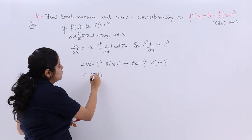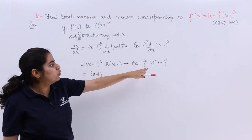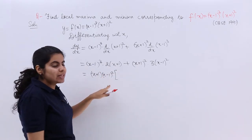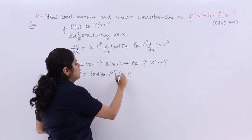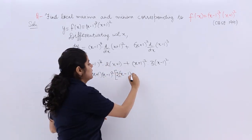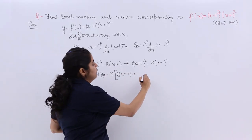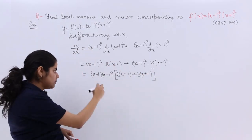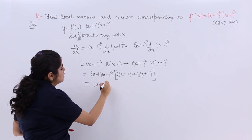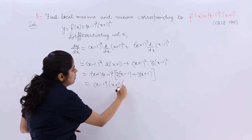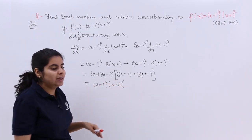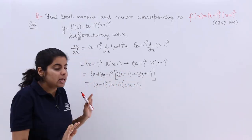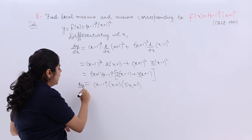Now take out the common factors. (x-1)² is common, and (x+1) is common. Taking (x-1)²(x+1) out: inside we get 2(x-1) from the first term and 3(x+1) — wait, simplifying: we get (x-1)²(x+1) multiplied by [2(x-1) + 3(x+1)], which gives 5x + 1. So dy/dx = (x-1)²(x+1)(5x+1).